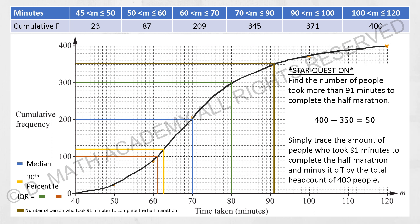Reverse it. Then you will get 350 people. But they want the group that is more than that. So you're required to take the total frequency of 400 minus 350. Then you'll get 50. So there will be 50 people that took more than 91 minutes to complete the half marathon.